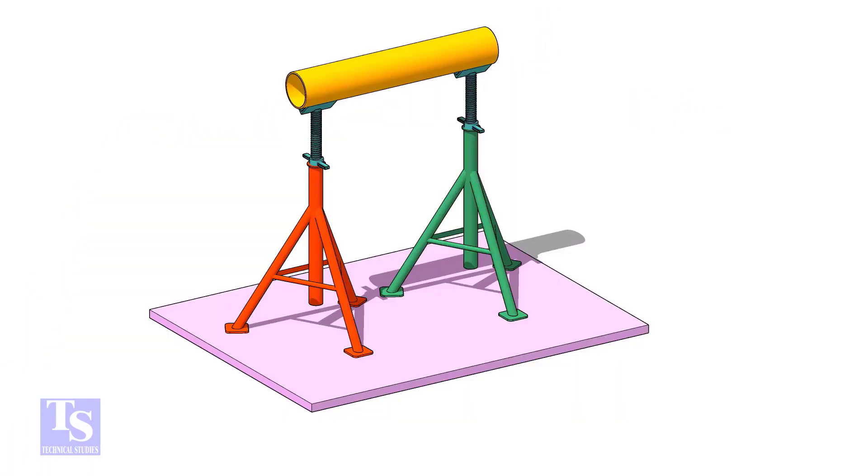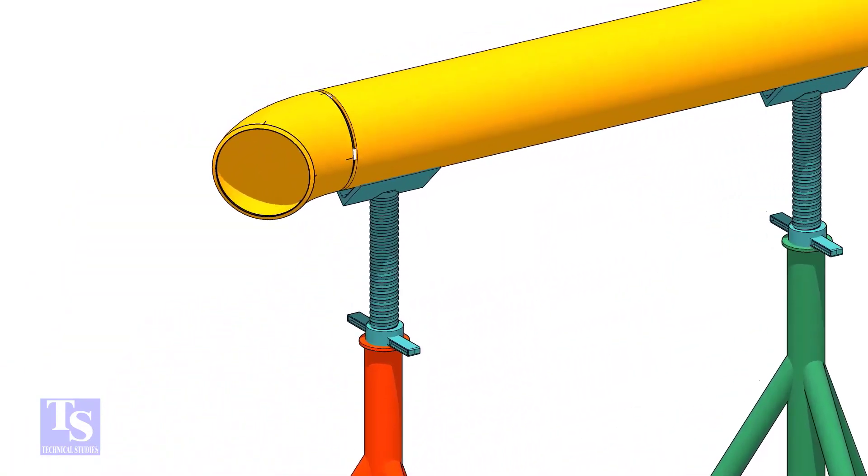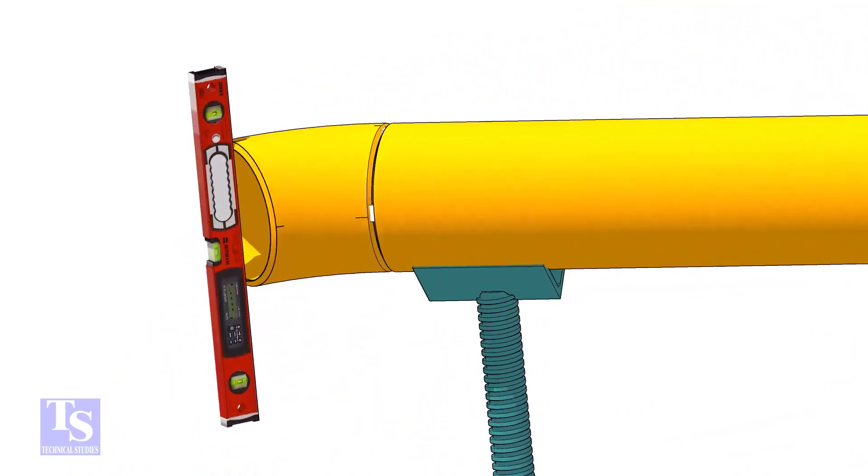Tack weld one elbow on a piece of the same size pipe. Level the elbow face through the center marks.